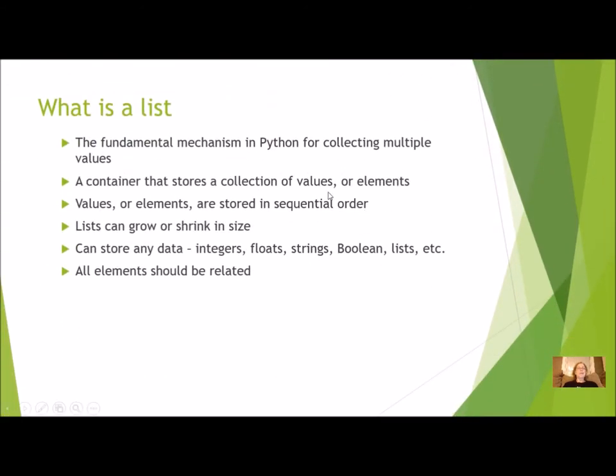What is a list? It is the fundamental mechanism in Python for collecting multiple values and just giving it one name so it's easy to access. It is a container that stores a collection of values which in programming we call elements. These values or elements are stored in sequential order. The first one we put in will be first and the second one second, so it's not going to all get mixed up in a jumble. The list can grow or shrink in size. We can add elements or we can take away elements.